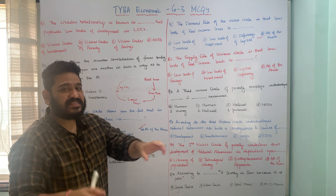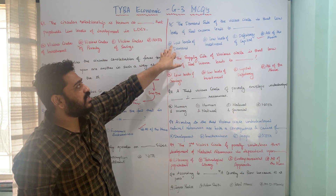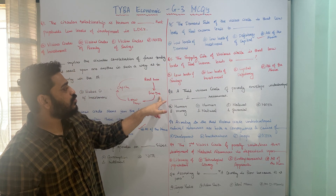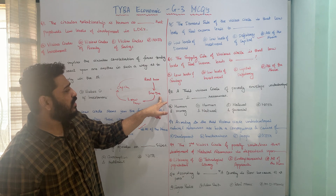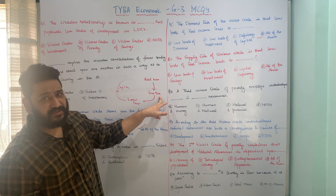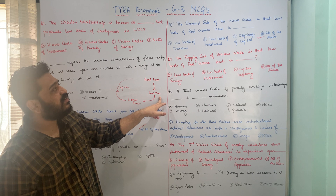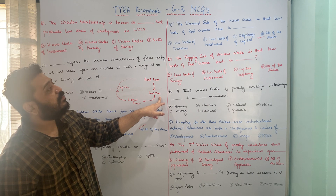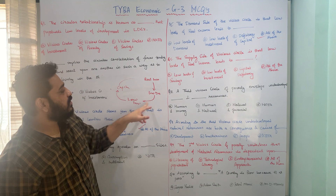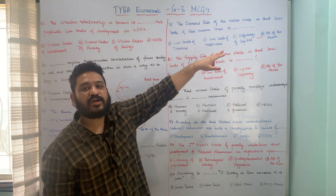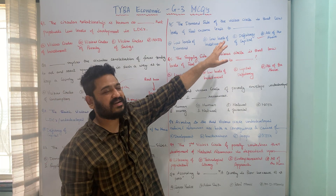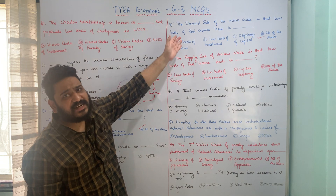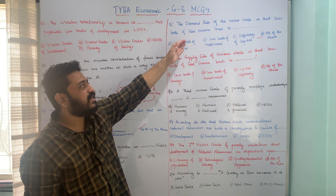If the question asks what real income explicitly leads to, then low levels of demand would be the correct answer, since real income directly leads to low demand. But here the question is asking implicitly, so it leads to all three things — low demand, low investment, and capital deficiency. Therefore, option D, all of the above, is the correct answer.